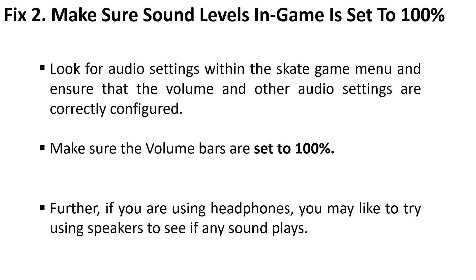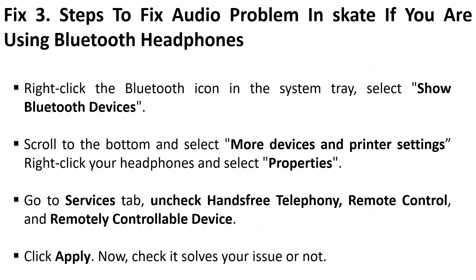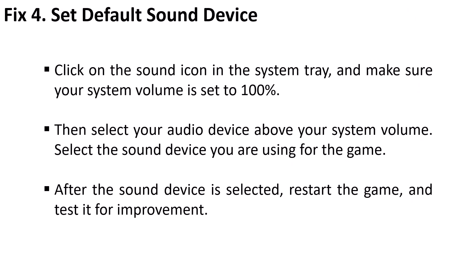Fix 3: Steps to fix audio problem in Skate if you are using Bluetooth headphones. Right-click the Bluetooth icon in the system tray, select Show Bluetooth Devices, scroll to the bottom and select More Devices and Printer Settings. Right-click your headphones and select Properties. Go to the Services tab and uncheck Hands-Free Telephony, Remote Control, and Remotely Controllable Device. Click Apply and check if it solves your issue.